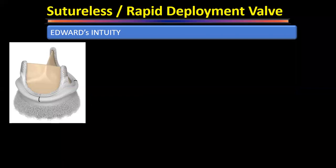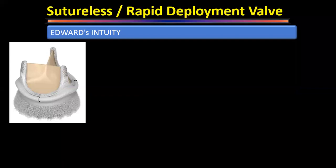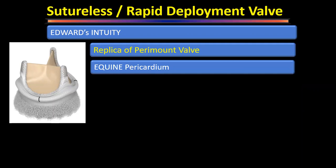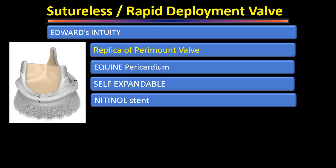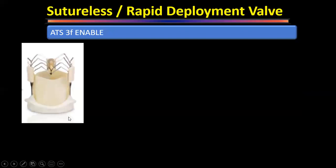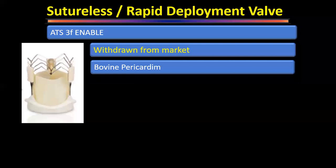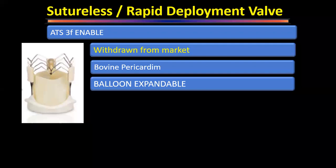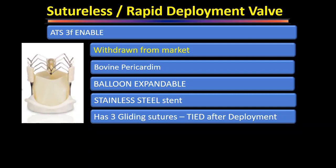Second, the Edwards Intuity valve — a replica of the Perimount valve, made of equine pericardium, self-expandable, with only one gliding suture that is tied after deployment, making it a rapid deployment valve rather than a truly sutureless valve. Third, the ATS 3f Enable valve — this has been withdrawn from the market due to higher incidence of pacemaker implantation and valve migration. It was balloon-expandable with stainless steel, with three gliding sutures all tied. The Perceval is completely sutureless; the other two have gliding sutures that are tied after deployment.